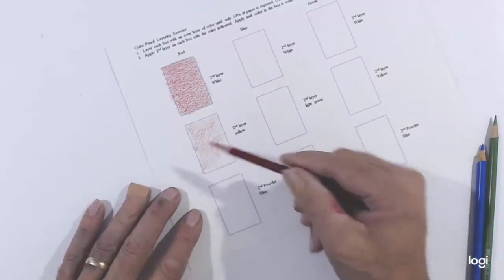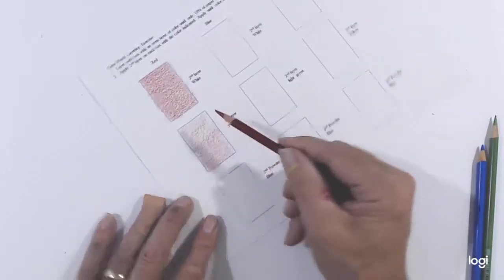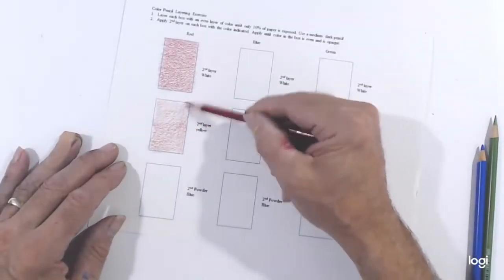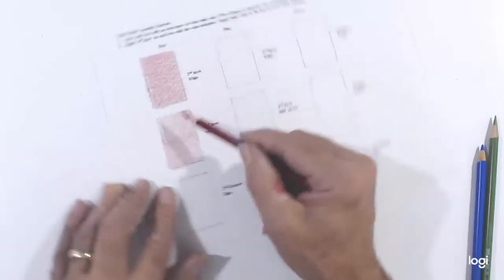We'll use the same technique that we used in the previous handout and try to layer a very even layer. That will help us later to also create an even solid color when we layer the second layer.